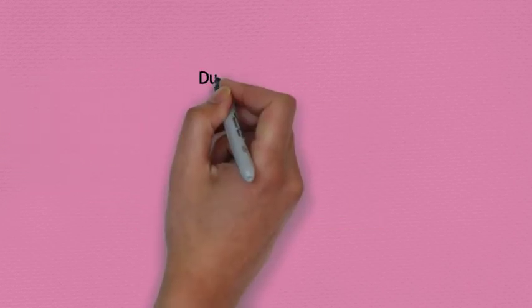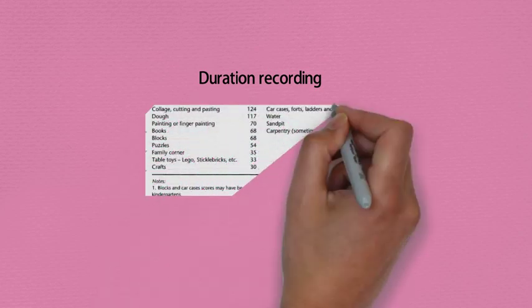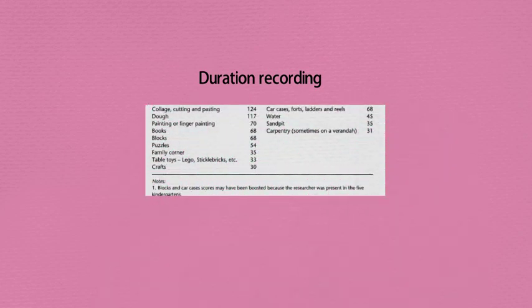The third technique is called duration recording, and it is what it says—it records durations of time. Again, you're going to have some criteria that you select and code against time, and you're going to look at how long things happen for. This might be a great way of looking at certain play contexts—how long is a child playing in the play-doh, how long is a child playing in dramatic play, and so on.